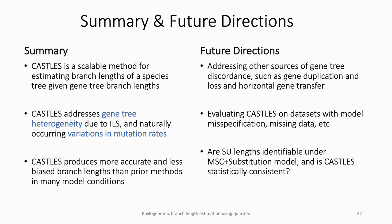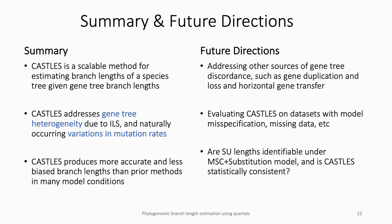To summarize, we introduced CASEL, a method for estimating branch lengths of a species tree given gene tree branch lengths, that accounts for gene tree heterogeneity due to ILS and allows for variation in mutation rates. In many conditions, it produces more accurate and less biased branch lengths than previous methods. As future directions, it is important to look at other sources of gene tree discordance such as gene duplication and loss and horizontal gene transfer, explore datasets with more challenging conditions such as missing data, and address the theoretical question of whether substitution unit branch lengths are identifiable and whether CASEL is statistically consistent under this extension of the MSC model. I would like to thank my co-authors Chau Zhang, Tandy Warnow, Siavash Mirarab, and all funding sources.